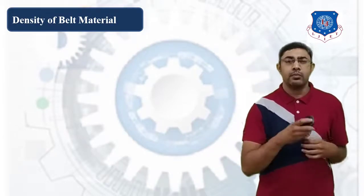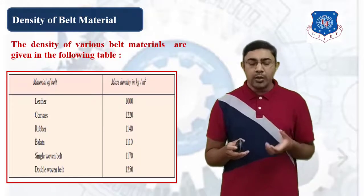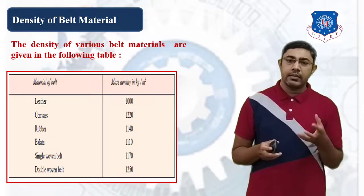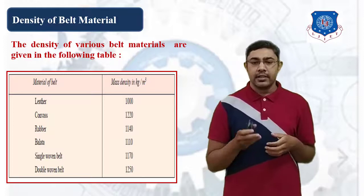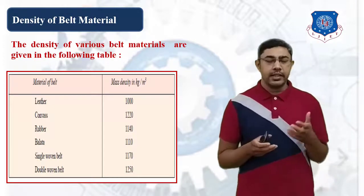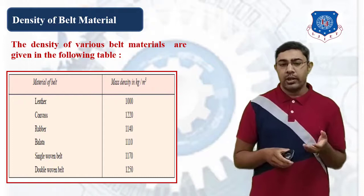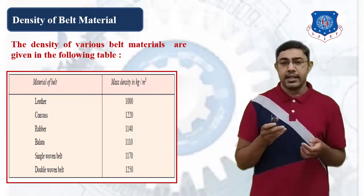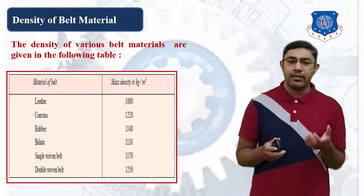Next is the density of belt materials. Generally, the materials used for belts include leather, canvas, rubber, and balata. According to these materials, you can look up the appropriate density from the table. This material density must be kept in mind — whenever it is not given in problems, you select it from this table. For example, the density of leather is 1000 kg per cubic meter, and the density of balata is 1110 kg per cubic meter.